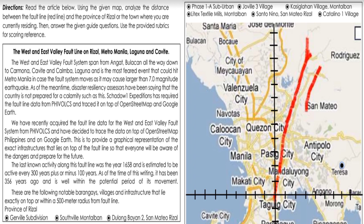As of the meantime, disaster resiliency assessors have been saying that the country is not prepared for a calamity such as this. Shadow 1 Expeditions has acquired the fault line data from PHIVOLCS and traced it on top of OpenStreetMap and Google Earth, to provide a graphical representation of the exact infrastructures that lie on top of the fault line so that everyone will be aware of the dangers and prepare for the future.